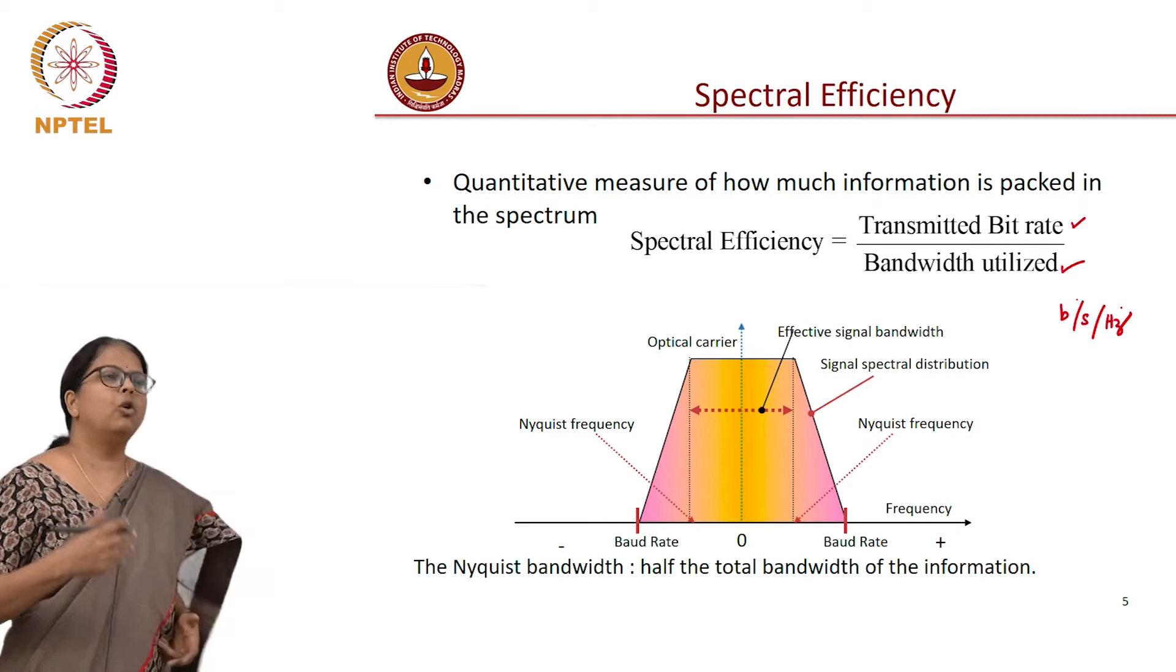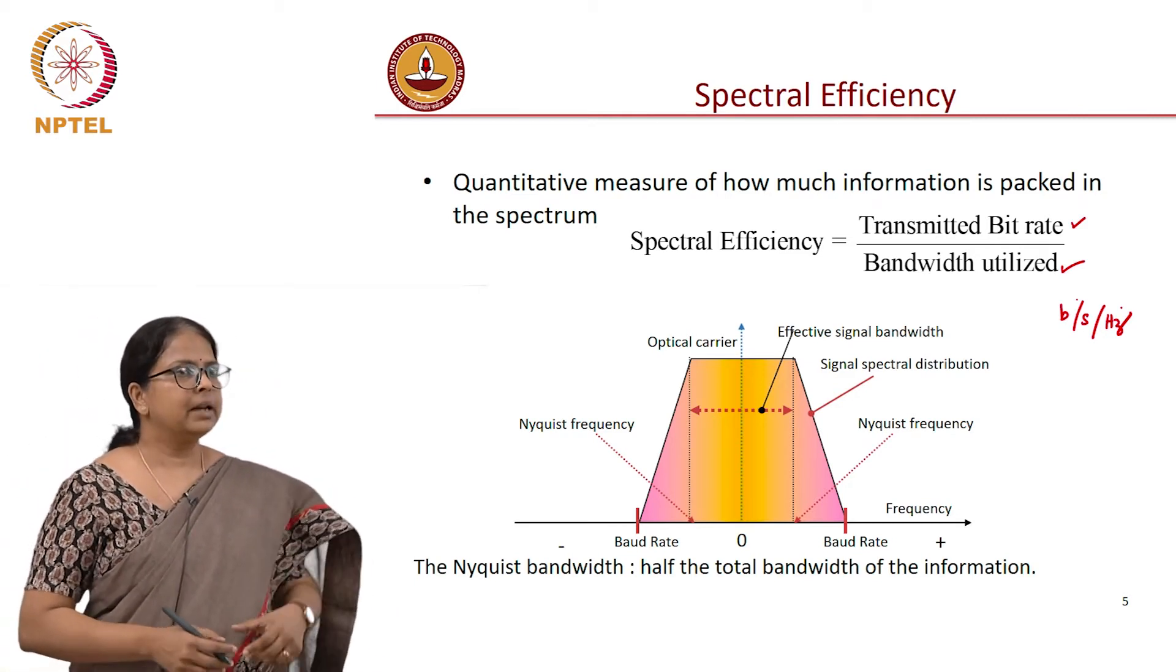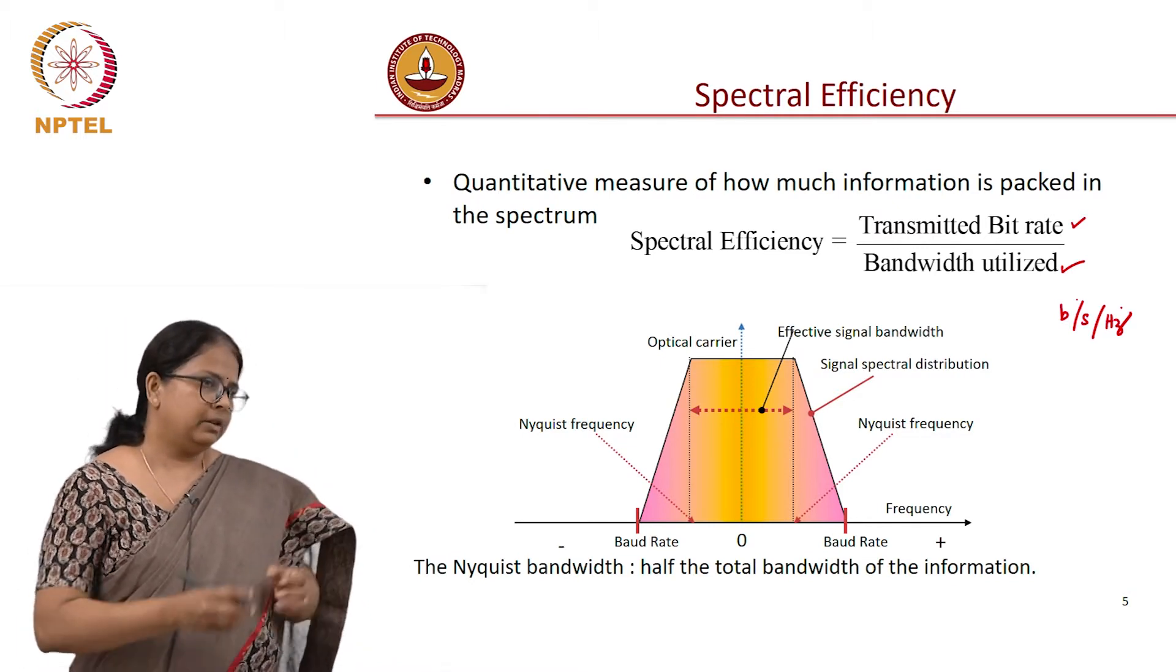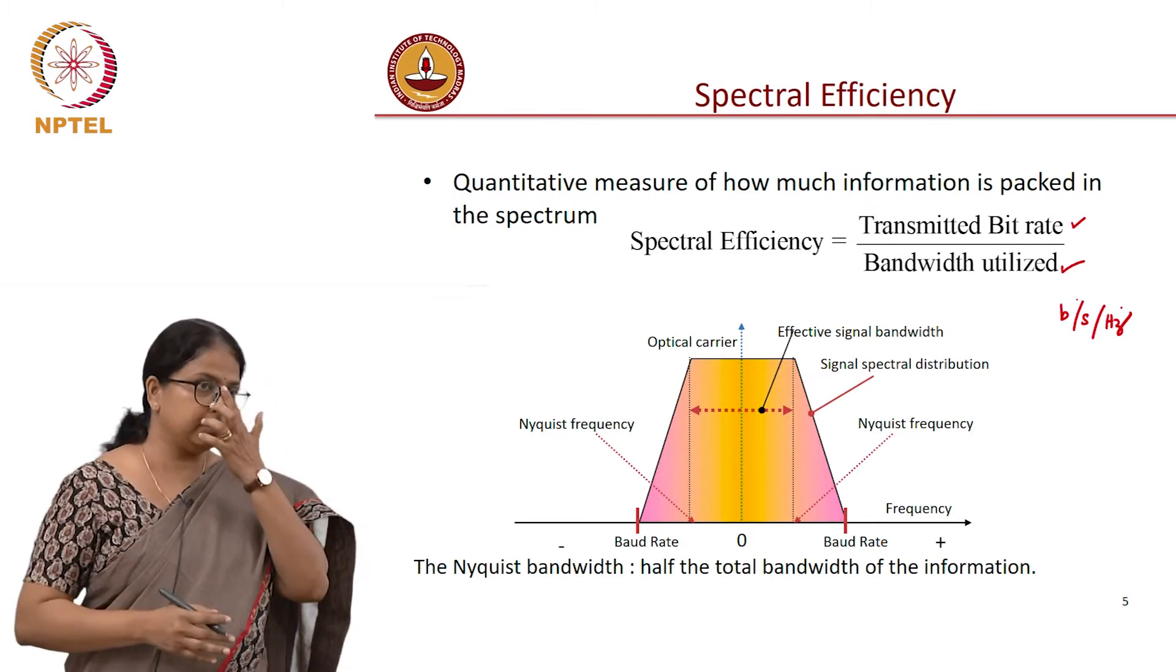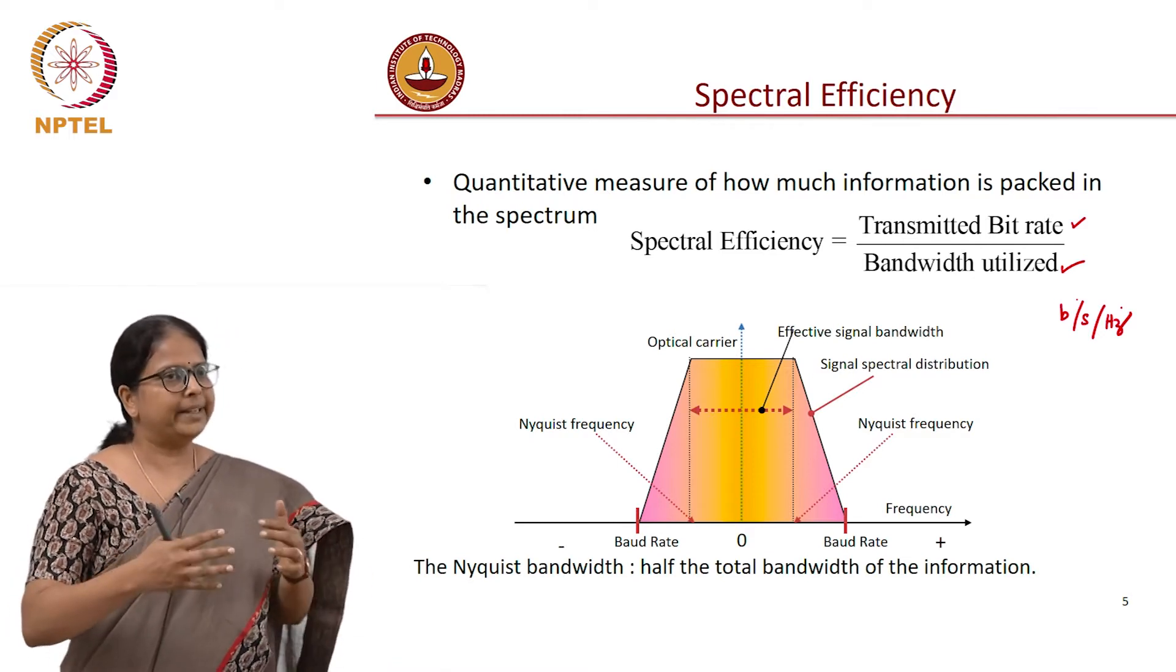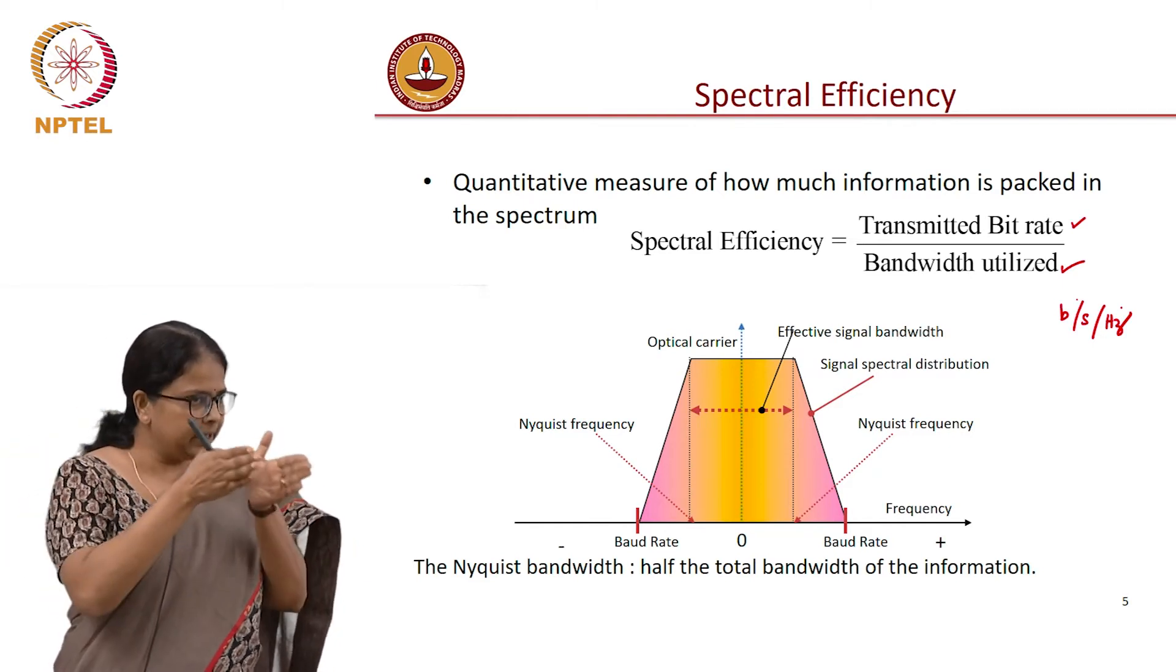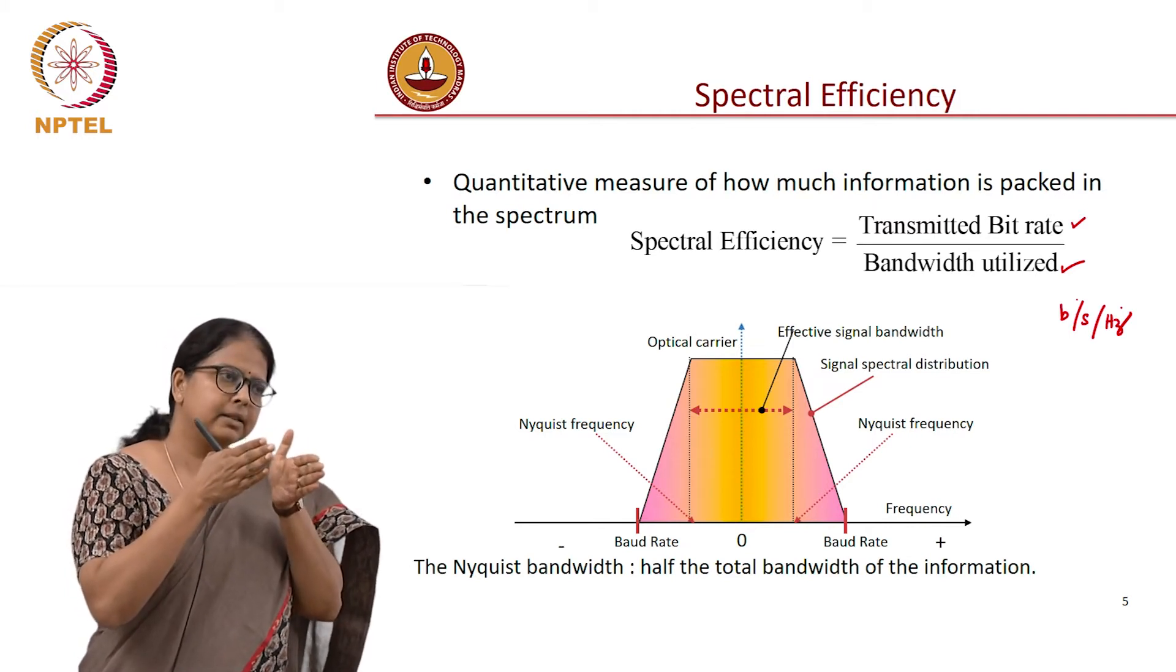And what is the goal of any communication system? Given bandwidth, you want to make this as large as possible. Given bandwidth, you want to transport as many bits as possible. All these different modulation formats, 16QAM and QPSK and so on, were all attempts to increase the number of bits that you transported in a given symbol duration or given spectrum.